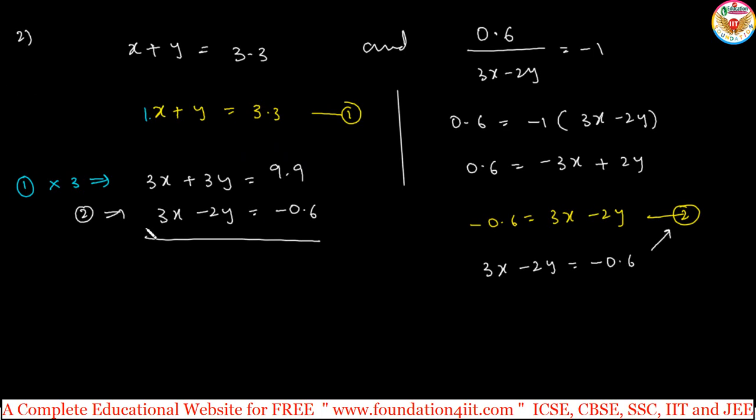Now you can subtract this because minus becomes plus, it is plus. So here you can cancel this: plus 3x minus 3x, plus 3y plus 2y, so plus 5y. 9.9 plus 0.6, so 10.5. Then y is equals to 10.5 by 5, 2.1. Y value is 2.1.